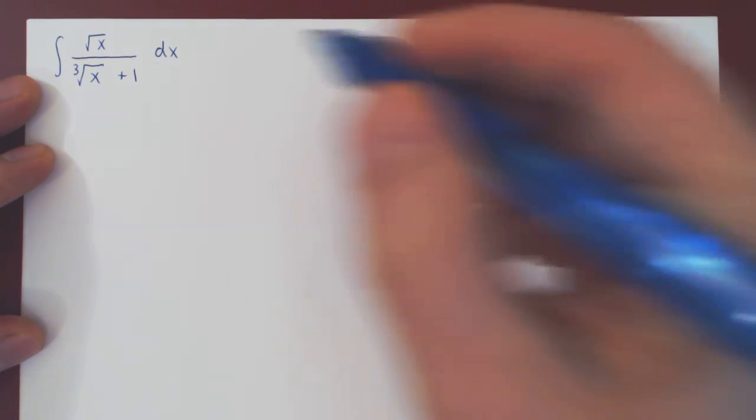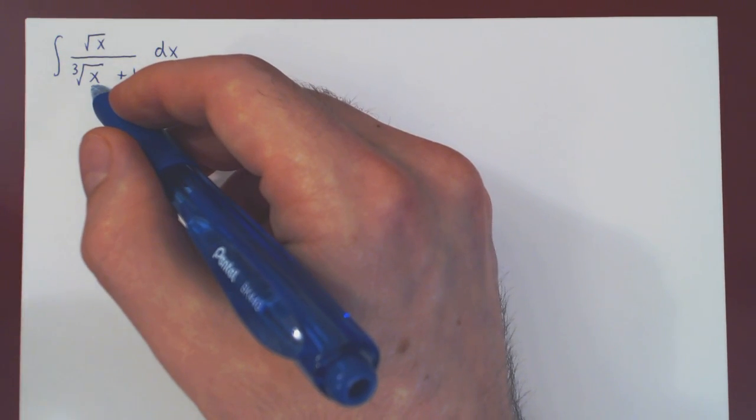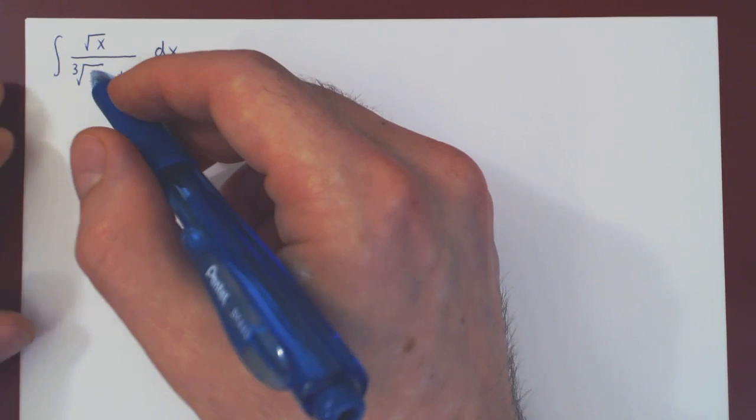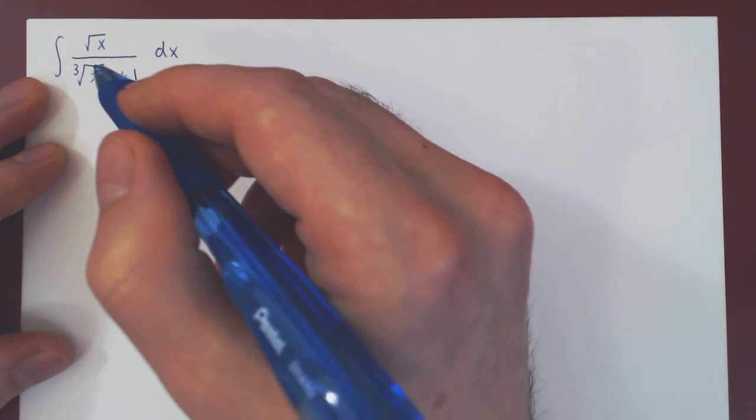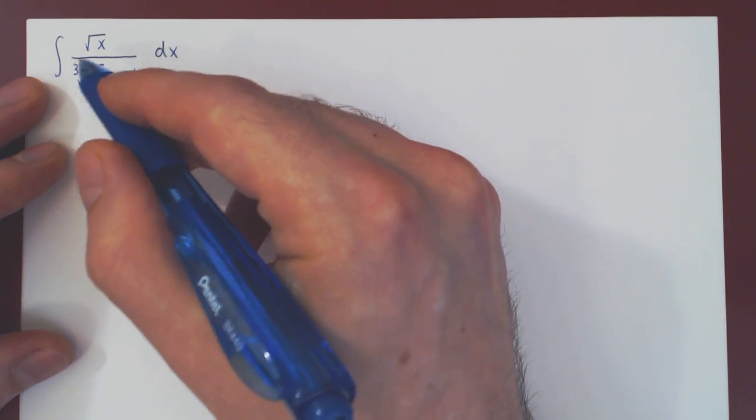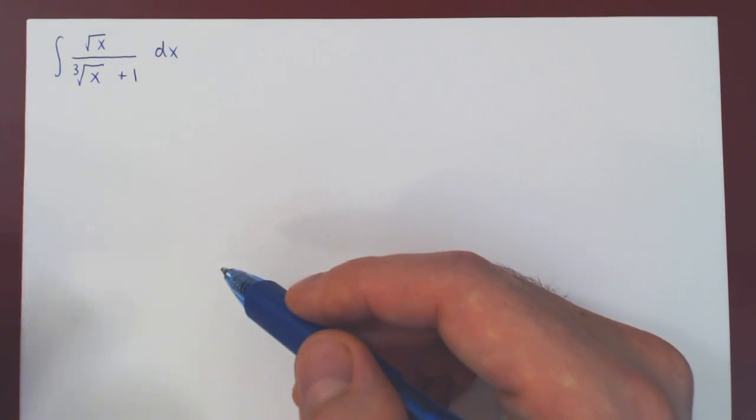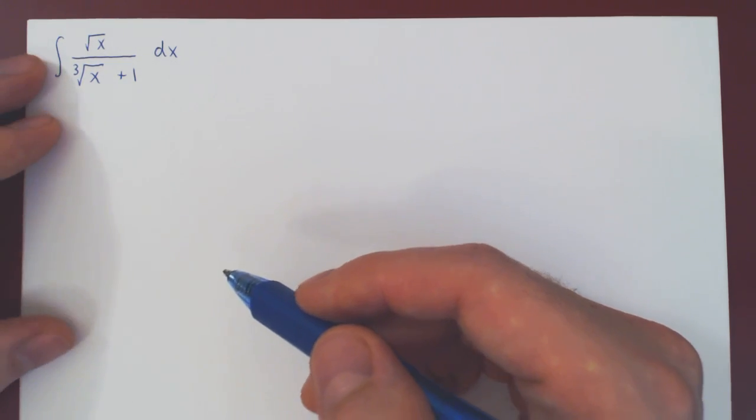So the idea is, how can we, by a proper choice of substitution, transform this function into a rational function? Therefore, how can we eliminate the fractional powers? And you'll see sometimes that a rationalizing substitution is also known as a v-substitution. And we'll use the letter v as our new variable to differentiate it from a u-substitution. It is a u-substitution, but a very special type of u-substitution.